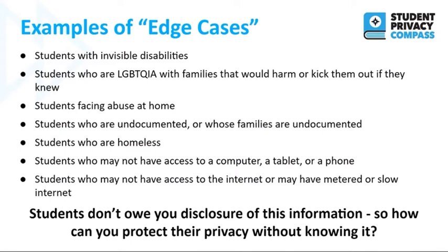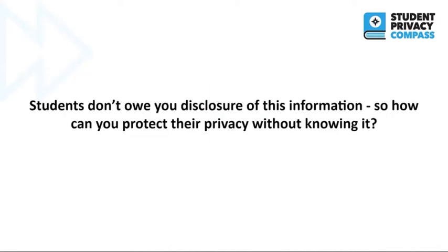Students don't owe us as educators — don't owe the school — disclosure of any of that information, and in fact, with some of it, it feels so sensitive that students may be reluctant to say anything. They may not want anyone to know because they don't know if they'll be discriminated against or harmed or suffer some social deterrent. So how can you protect their privacy anyway? How can you make sure that you're being proactive and thinking of those edge cases as you're applying all of the information about privacy that you're getting throughout this training?